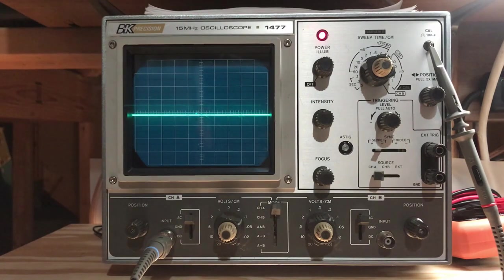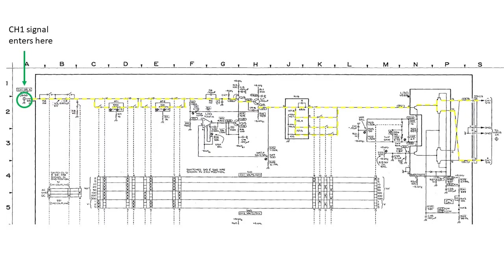If we look at the schematic, the signal enters on the left of the B and C. It travels through a whole bunch of different components before exiting the right through that connector that I mentioned. And so there's a few ways to do this. You can probe from left to right until you stop seeing the signal. You can probe from right to left until you start seeing the signal. Or you can start in the middle and then if you see the signal, you move to the right. If you don't see the signal, you can move to the left. I'm just going to probe from left to right.